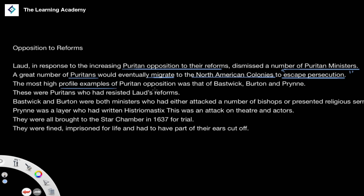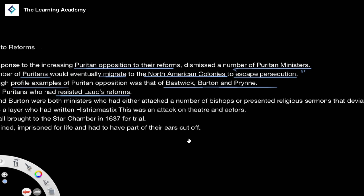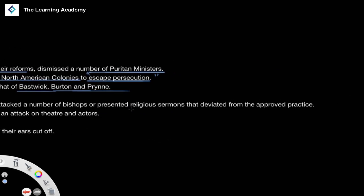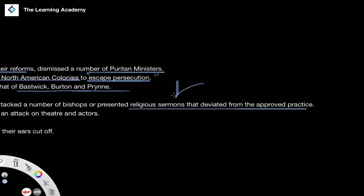The most high-profile examples of Puritan opposition were those of Bastwick, Burton, and Prynne. These were Puritans who had resisted the reforms made by Laud and were vocal in their opposition. Bastwick and Burton were both ministers who had either attacked a number of bishops or presented religious sermons that deviated from approved practice — sermons clearly made in opposition to the reforms.